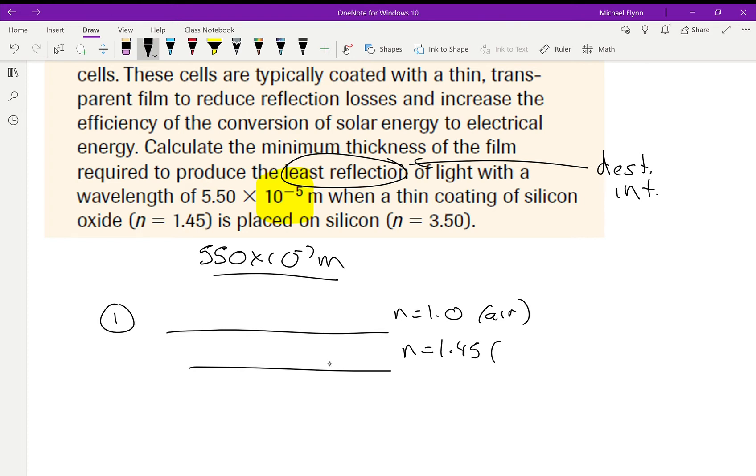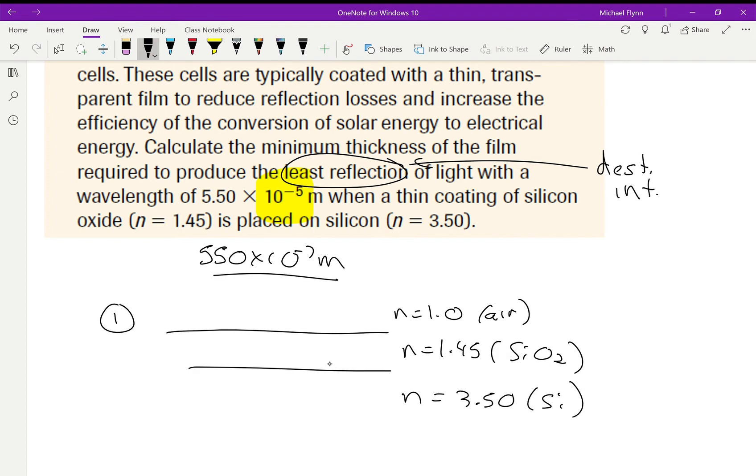Here, I guess I'll write it like this. So, silicon oxide, and then here on the bottom, 3.50, that's just silicon. Okay, like that.